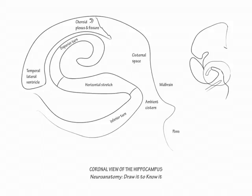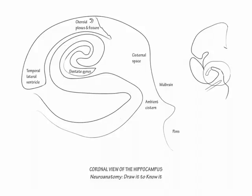The cornu ammonis comprises the superior turn, the subiculum lies along the horizontal stretch, and the entorhinal cortex is along the inferior turn. We will label them after we first draw the C-shaped dentate gyrus cupping the tip of the superior turn.